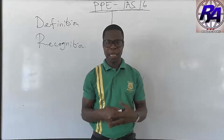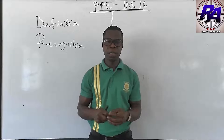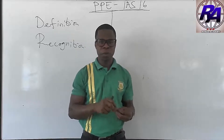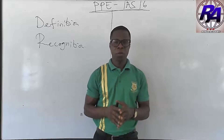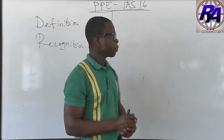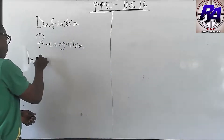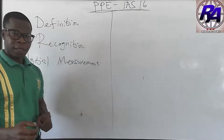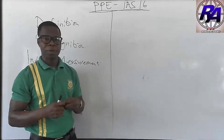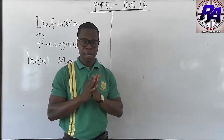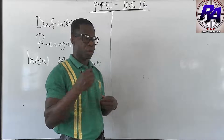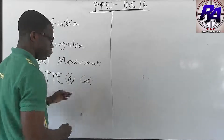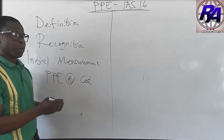Now that we know when to recognize an item of PPE, let's look at the measurement. When a company wants to initially measure its PPE or its item of property, plant and equipment, the standard says it should initially be measured at cost. So at initial measurement, PPE should be measured at cost.